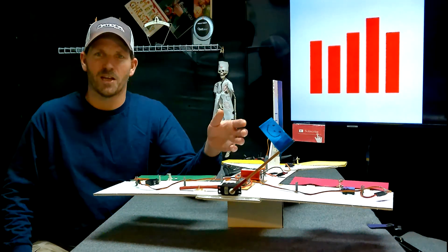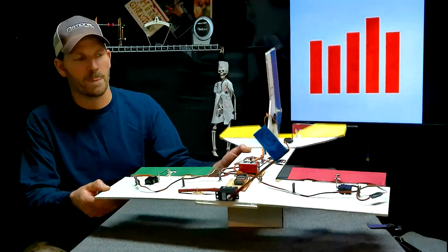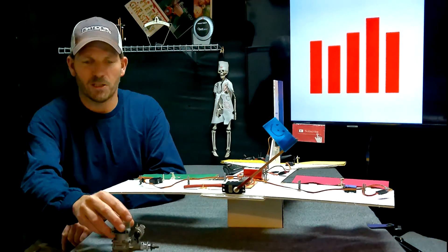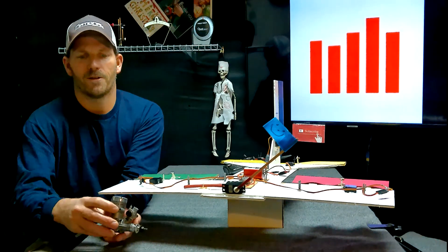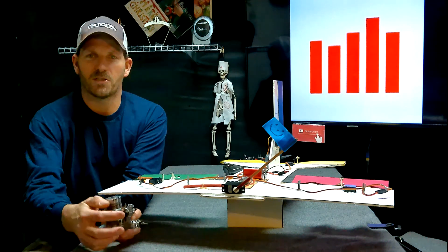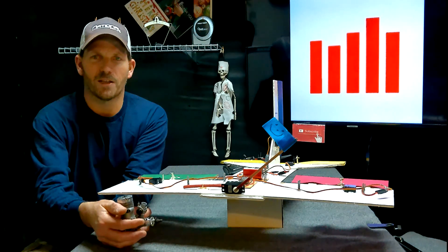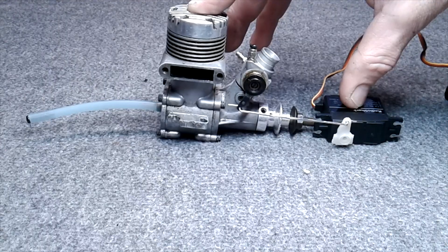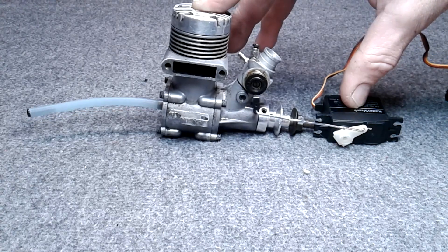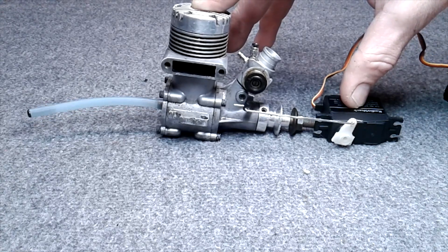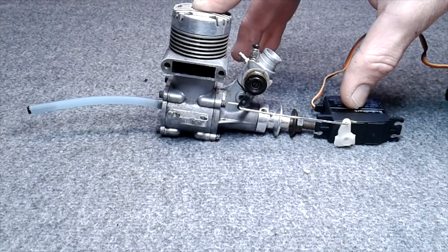And the servo was plugged into channel number one on the receiver, just like the servo is plugged into channel number one on this receiver, an AR630. This is a glow engine that I'm going to have on a plane soon that Steve sent me. And the arm on the side, this is the carburetor, this is the arm for the throttle. And let me show you how the servo operates that. Just like that. Full throttle and then that's idle. Full and idle.